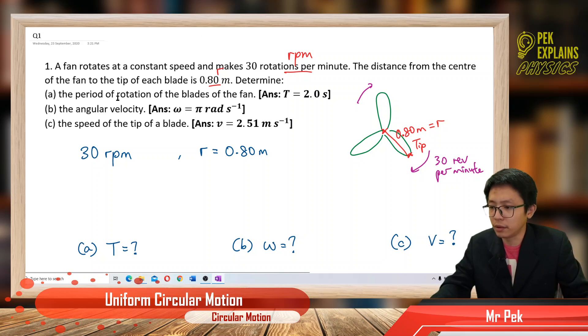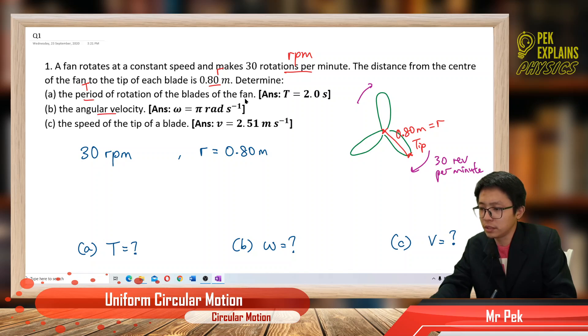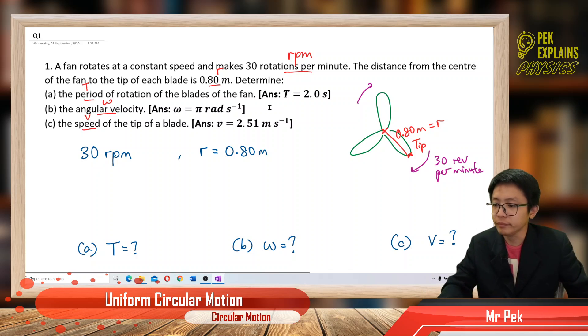Determine the period of the rotations of the blades of the fan. So he asked to find the period. Now the angular velocity, omega, and the speed of the tip of the blade. So this is v.